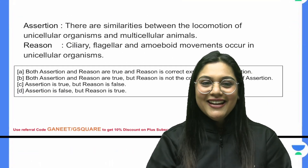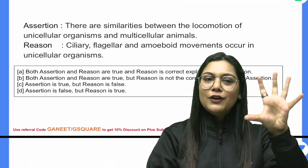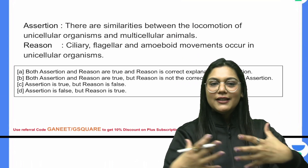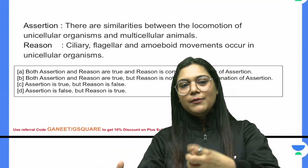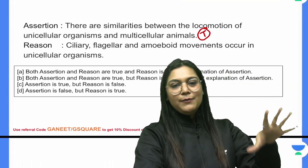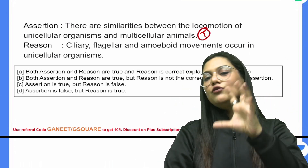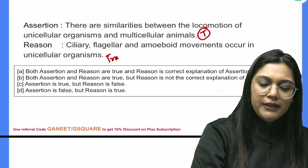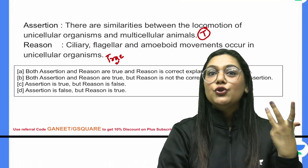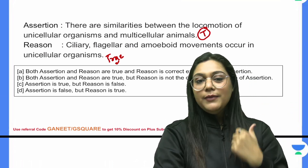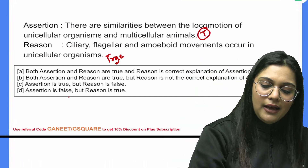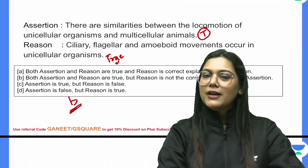Question 2: There are similarities between the locomotion of unicellular and multicellular organisms. This is true. The reason states that ciliary, flagellar, and amoeboid movements occur in unicellular organisms — this is also true. For ciliary movement it is Paramecium, for flagellar movement it is Euglena, and for amoeboid movement it is Amoeba. However, the reason does not correctly explain the assertion, so the answer should be B.